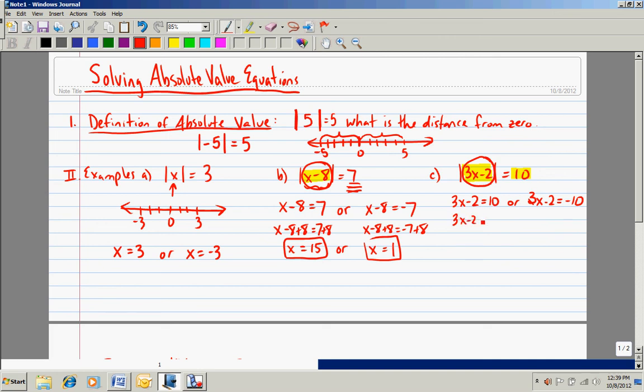And now we can solve the equation. 3x minus 2. I would have to add 2 to both sides, and I'd be left with 3x is equal to 12. And then if we divide by 3, we get x equals 4. In the other example, I would have to add 2 to both sides of the equation, which leaves me with 3x is equal to negative 8. And then dividing by 3 gives me negative 8 thirds. So our two possibilities that make the value in the absolute value symbol, that make it 10 or negative 10, are 4 and negative 8 thirds.